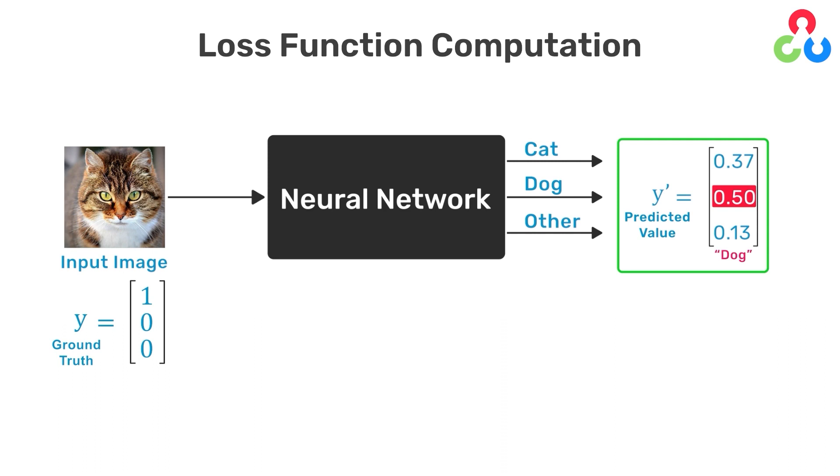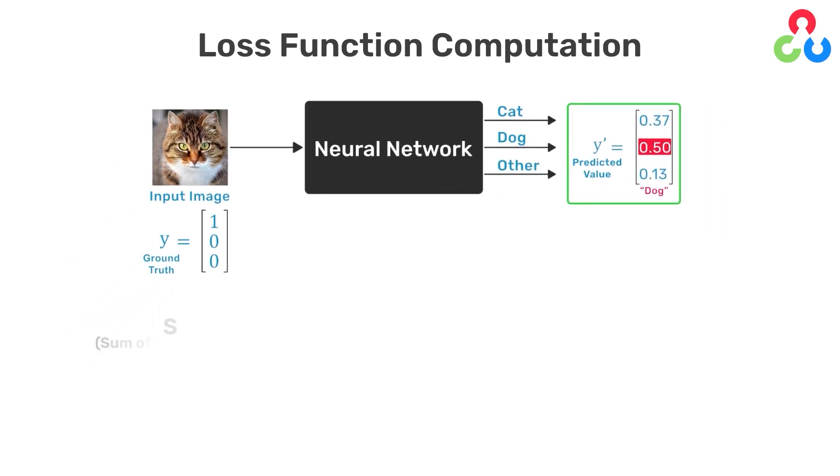One way to quantify the error between the network output and the expected result is to compute the sum of squared errors as shown below. As an example, we're calculating the error for a single training sample by computing the difference between the elements of the ground truth vector for the training sample and the corresponding elements of the predicted output and then squaring each of those terms and computing the sum, which in this case is 0.6638.